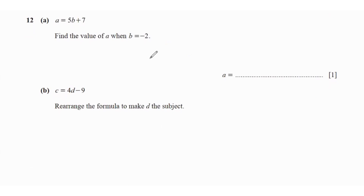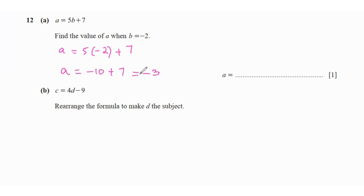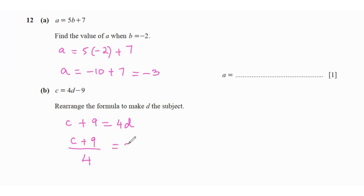Question 12: A = 5(B + 7). Find A when B = −2: A = 5 × (−2) + 7 = −10 + 7 = −3. Then C = 4D − 9 — rearrange to make D the subject. C + 9 = 4D, so D = (C + 9) ÷ 4. Always move additions and subtractions first, then deal with multiplication and division.